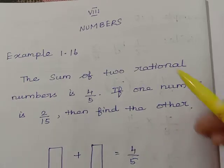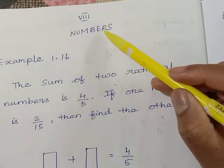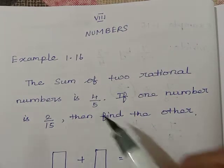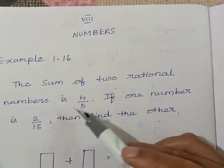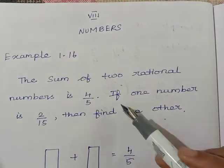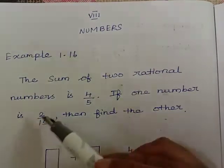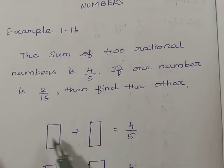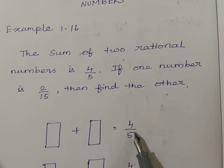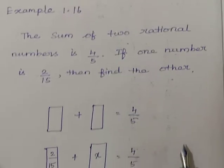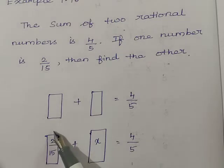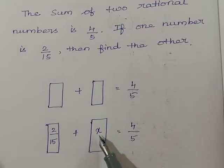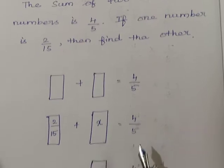Today we are going to learn standard numbers, Example 1.16. The sum of 2 rational numbers is 4 by 5. If one number is 2 by 15, then find the other. When you add any 2 rational numbers your answer is 4 by 5, and one of the rational numbers is 2 by 15. We have to find the other rational number. Let the unknown number be x.